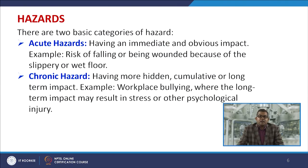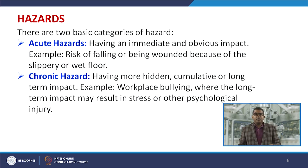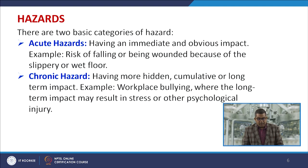When categorizing hazards, there are two basic categories. First, acute hazards — those with immediate and obvious impact, such as the risk of falling due to a slippery or wet floor. Second, chronic hazards — those with a more hidden, cumulative, or long-term impact, such as workplace bullying, where the long-term impact may result in stress or other psychological injuries.